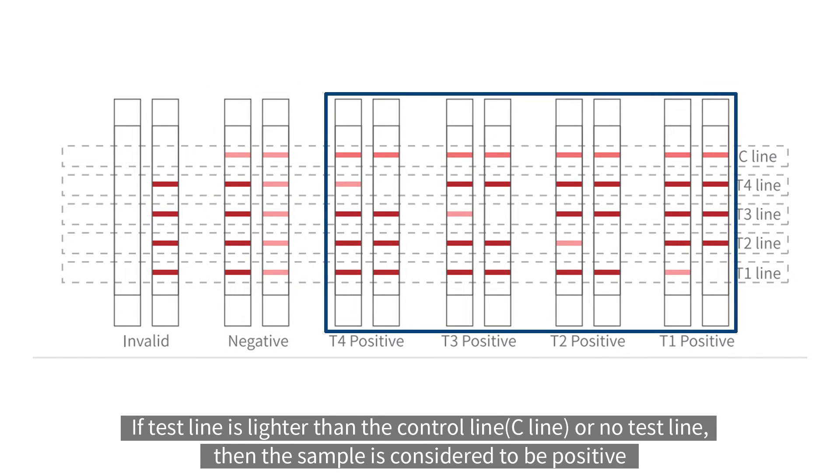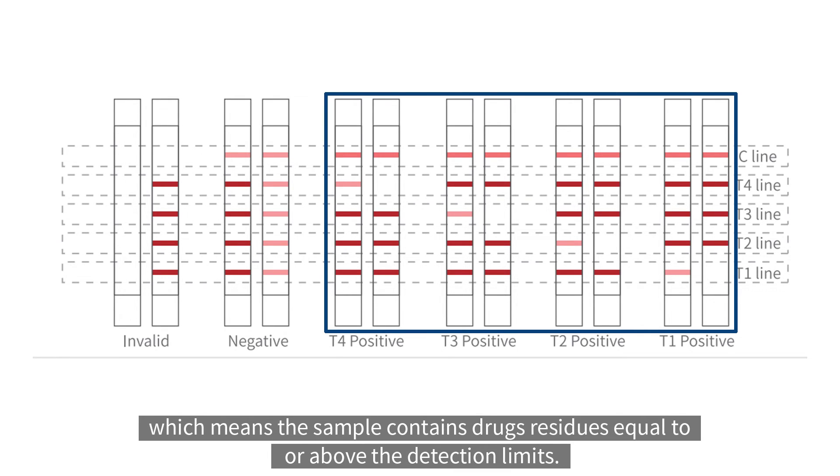If test line is lighter than the control line or no test line, then the sample is considered to be positive which means the sample contains drugs residues equal to or above the detection limits.